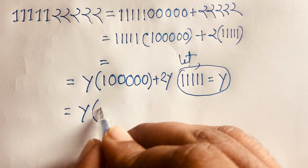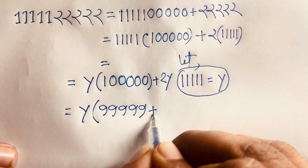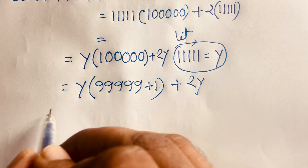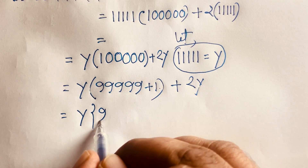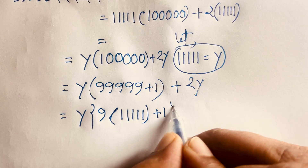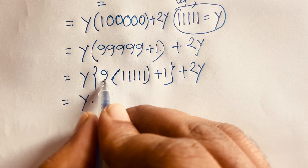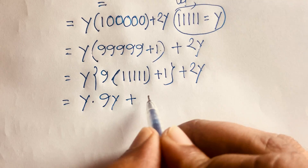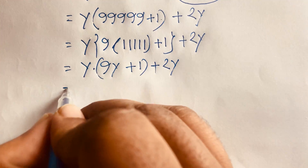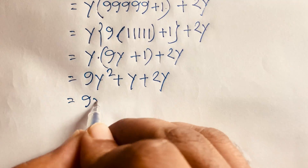So it will be — if I add 1 here, it is then 99999 plus 1 — so I can say this plus this it will be this plus 2y. Then I can say really it will be y times 9 times 11111 plus 1 plus 2y, then this equation becomes y times 9y plus 1 plus 2y.